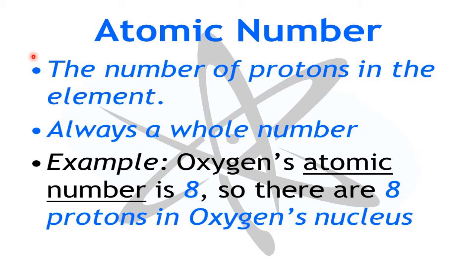In each shell or orbit, the maximum number of electrons accommodated is calculated using the formula 2n², where n is the shell number. For K shell n=1: 2×1²=2. For L shell n=2: 2×2²=8. For M shell n=3: 2×3²=18. For N shell n=4: 2×4²=32.